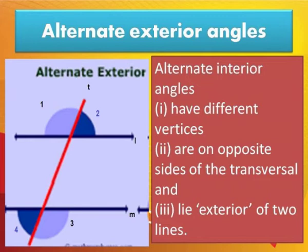Alternate exterior angles have different vertices, lie on the opposite side of the transversal, and lie exterior to the two lines. In this figure there are two pairs of alternate exterior angles. The first pair is angle 1 and angle 3 — they have different vertices, lie on opposite sides of the transversal, and lie exterior to lines L and M. Another pair is angle 2 and angle 4. In each transversal we can find two pairs of alternate exterior angles.